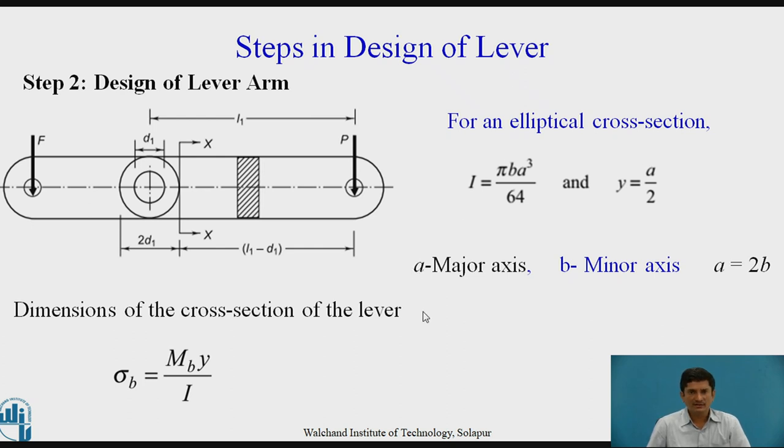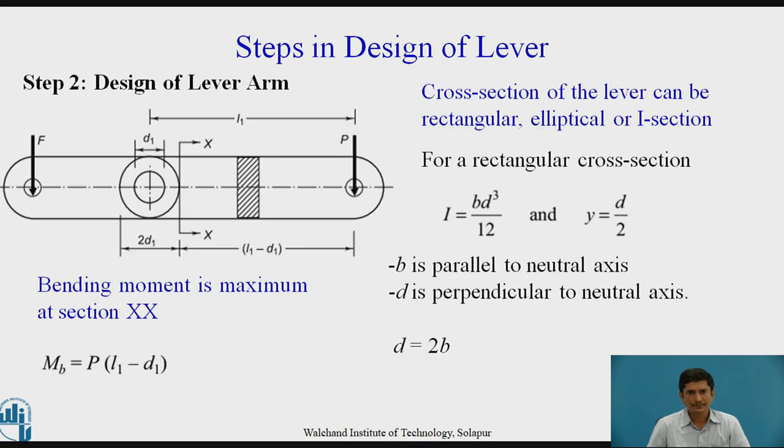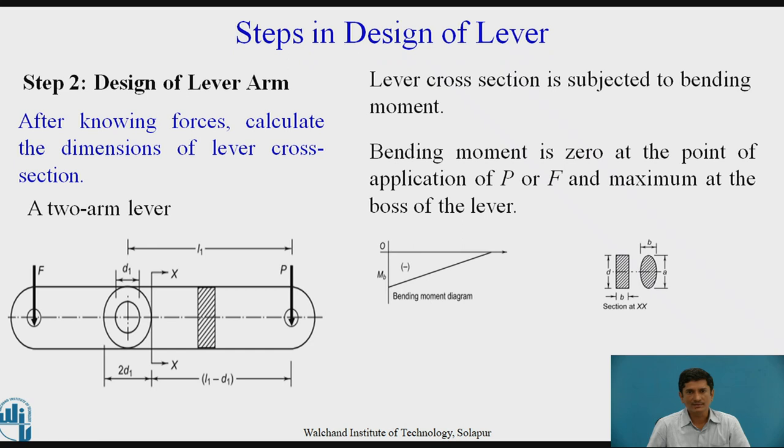In the previous slide we have seen that the bending moment is maximum at the fulcrum point and it is zero at the point of application of effort. It is very clear that bending moment varies from minimum to maximum. Therefore it is not advisable to use uniform cross section of a lever.